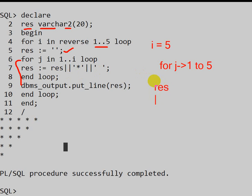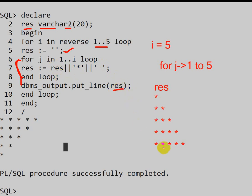In the first iteration, one star is added to result. In the second iteration, a second star is concatenated. In the third, a third; in the fourth, a fourth; and in the fifth iteration, the fifth star is added. Using the concatenation operator, after 5 iterations, result holds 5 stars. End of the inner loop occurs, and we print the result — 5 stars are printed.